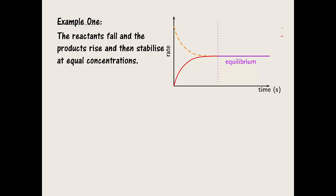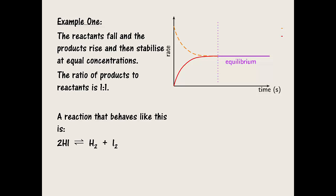In this first example, the relative amount of reactants fall to 50%, and the relative amount of products rises to 50%. When the equilibrium point is reached after a period of time, the concentrations stabilize and no longer change. At this point, the ratio of products to reactants will be 50-50 or 1-1. The equilibrium between hydrogen iodide, hydrogen and iodine gases behaves like this.